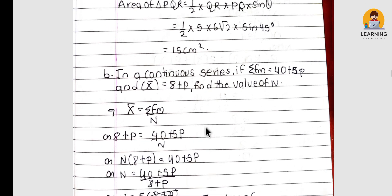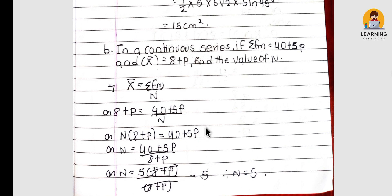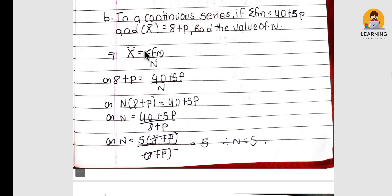In a continuous series, if Σfm = 40 + 5p and n = 8 + p, find the value of p. Using the formula: mean = Σfm / n, we can solve for p.